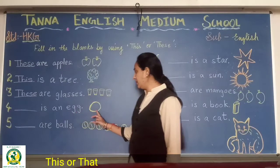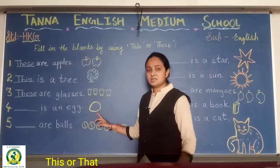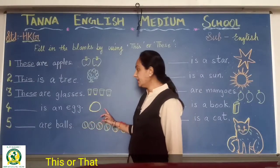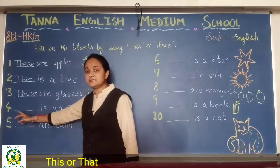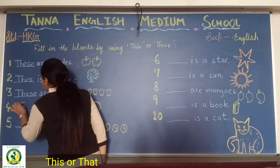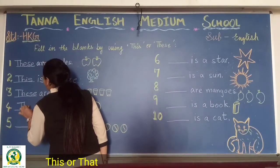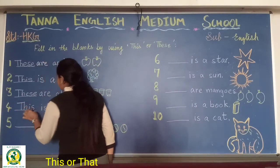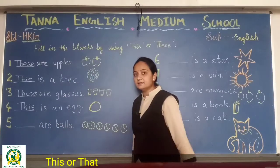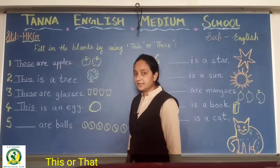Now how many eggs can you see here? Only one egg. So what will you write here? 'This.' T-H-I-S. This is an egg.